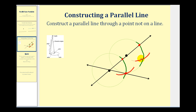Now we'll construct a line that passes through this point and the intersection of these two arcs. This will be the line that's parallel to the given line and passes through the given point.